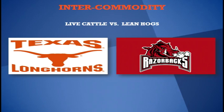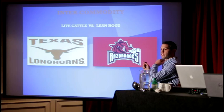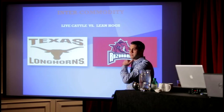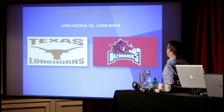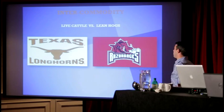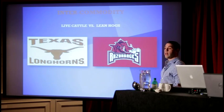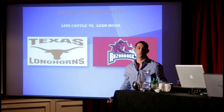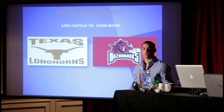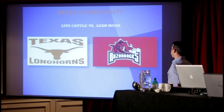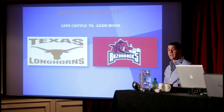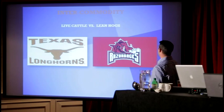Here are some intercommodity spreads to go over. Cattle versus hogs — this is a play on supply versus demand. What are households eating, pork or beef? The margin benefit for this spread is about 70% if you're holding each of these contracts.